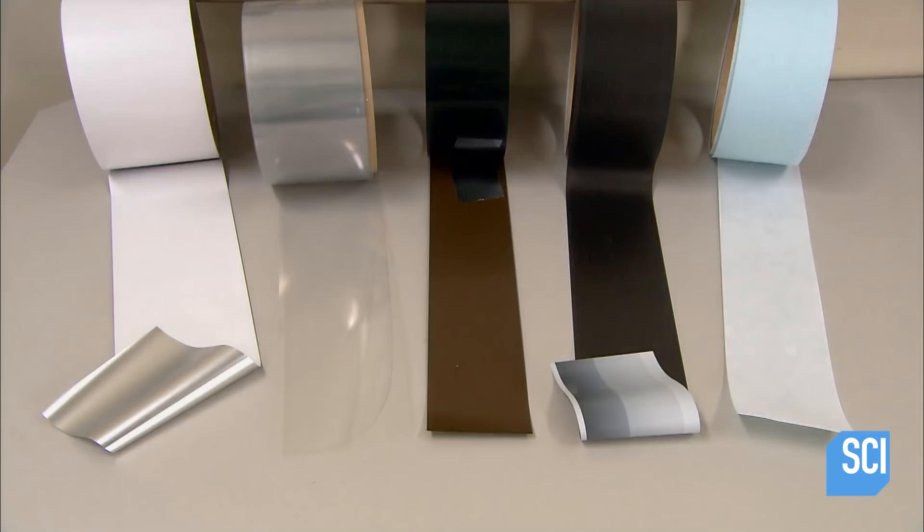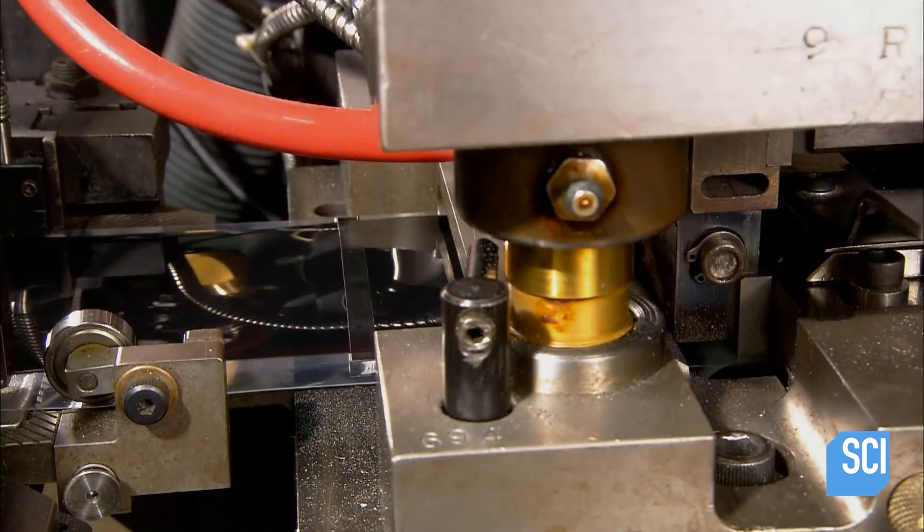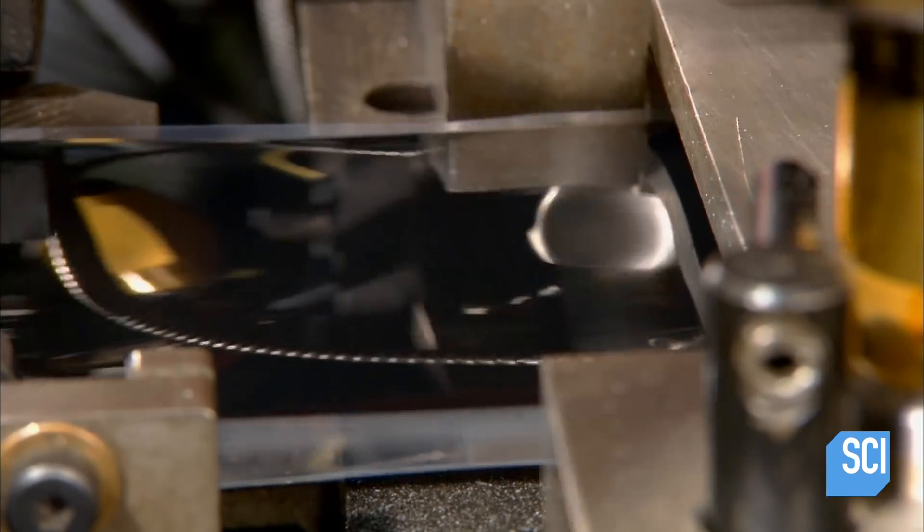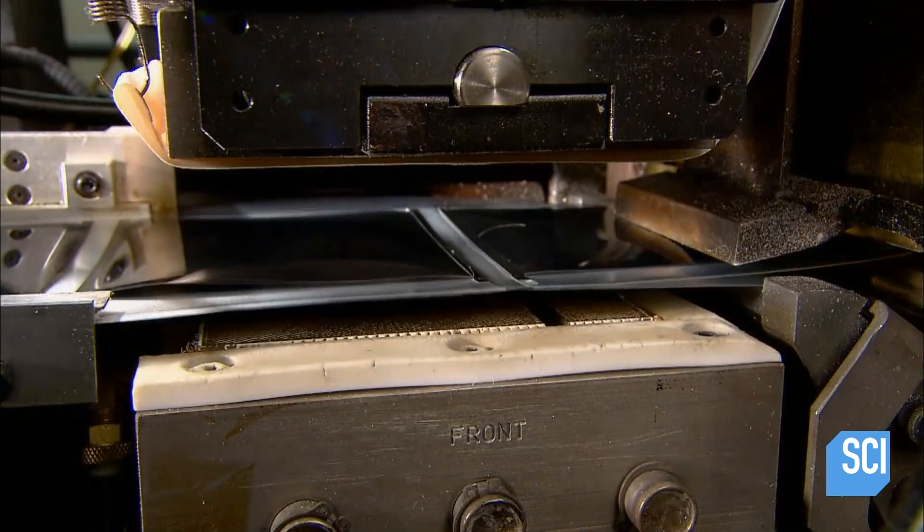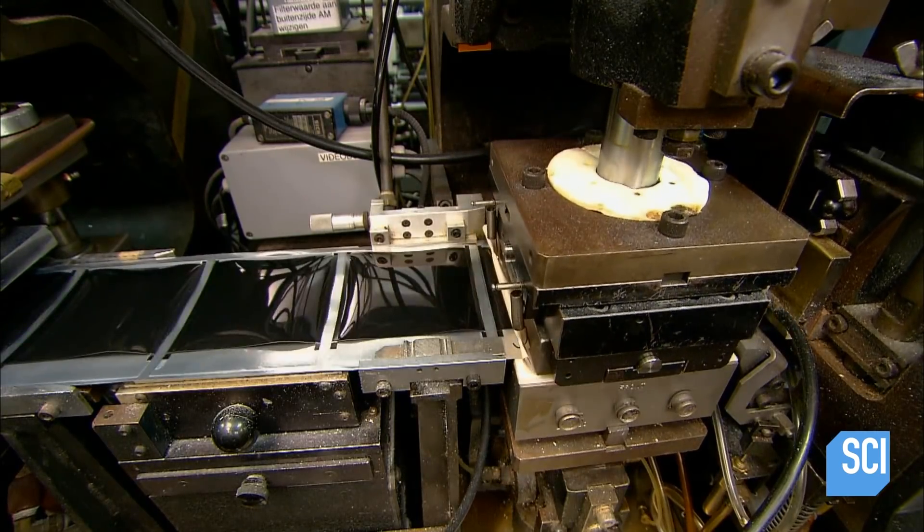Here's a lineup of the various materials to be assembled. That's the mask on the far left and the negative in the middle. The negative heads towards a series of hot presses. One press laminates a plastic spacer called the rail to the negative.